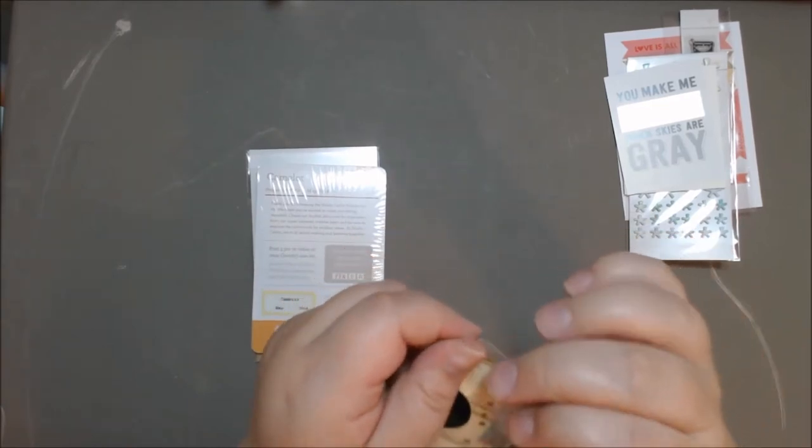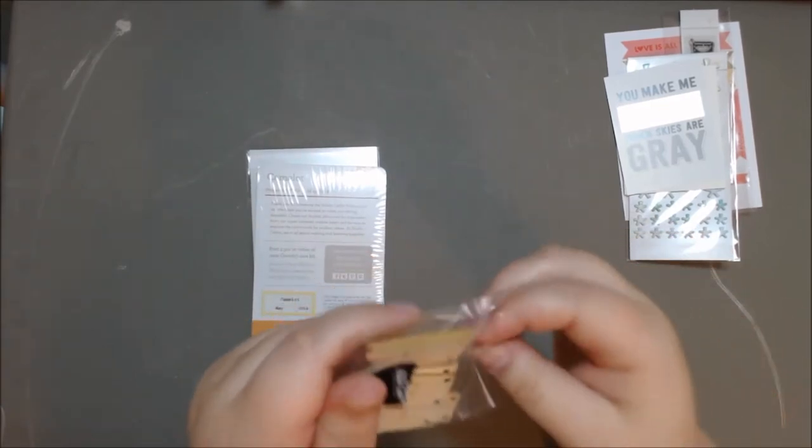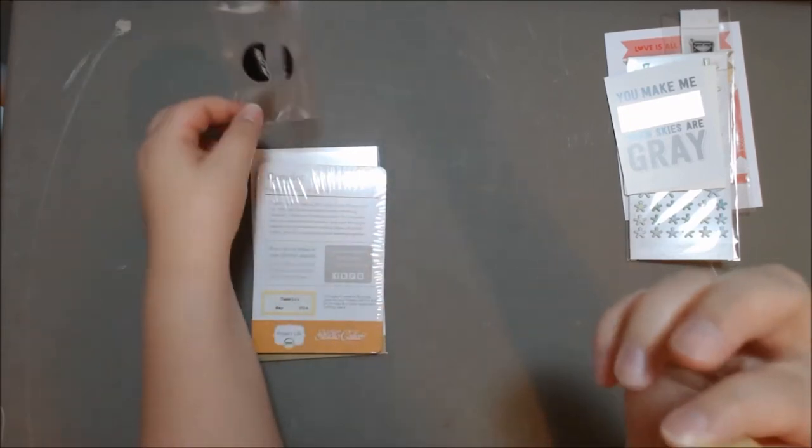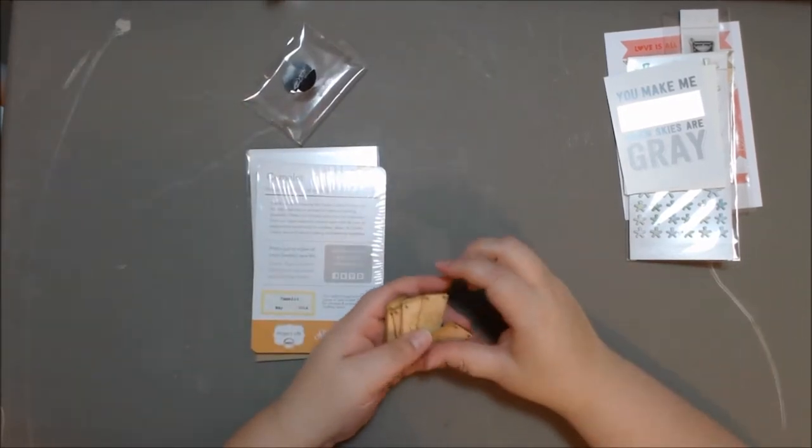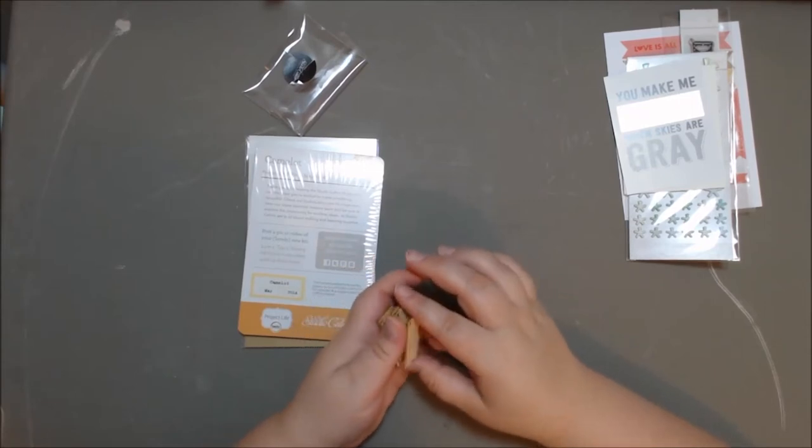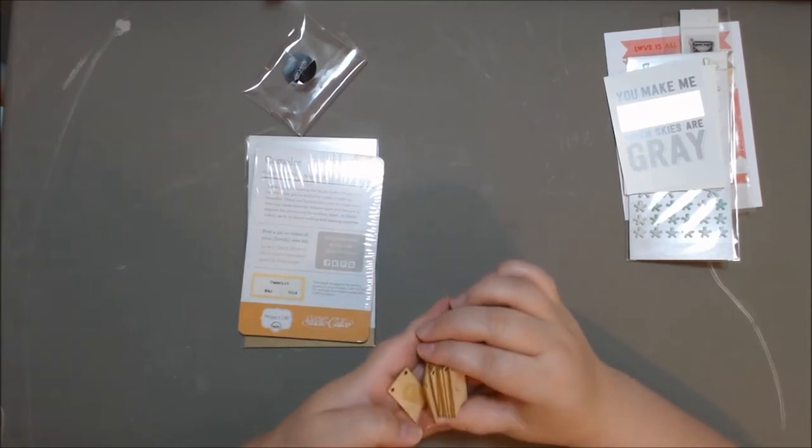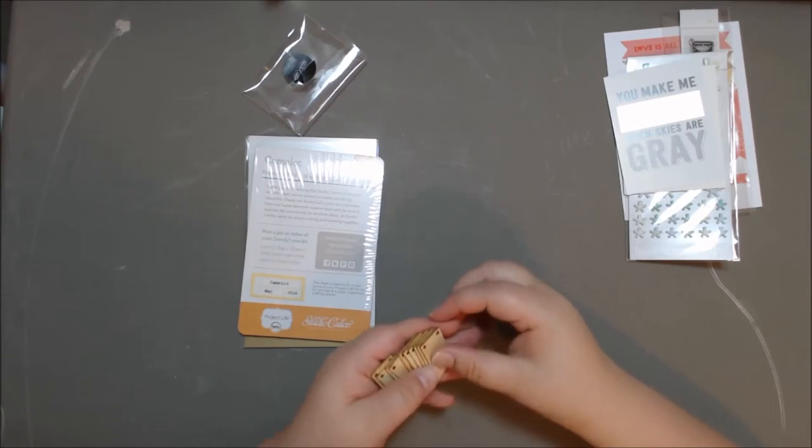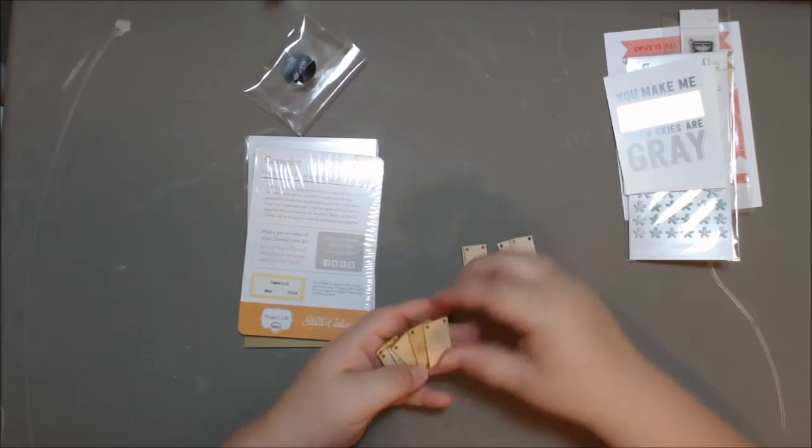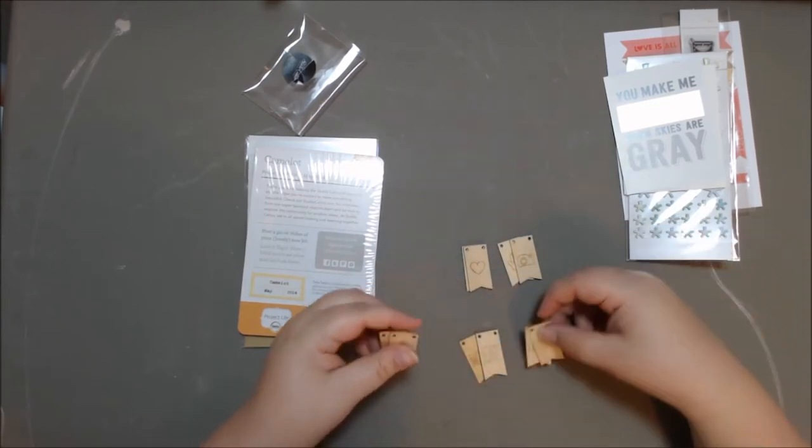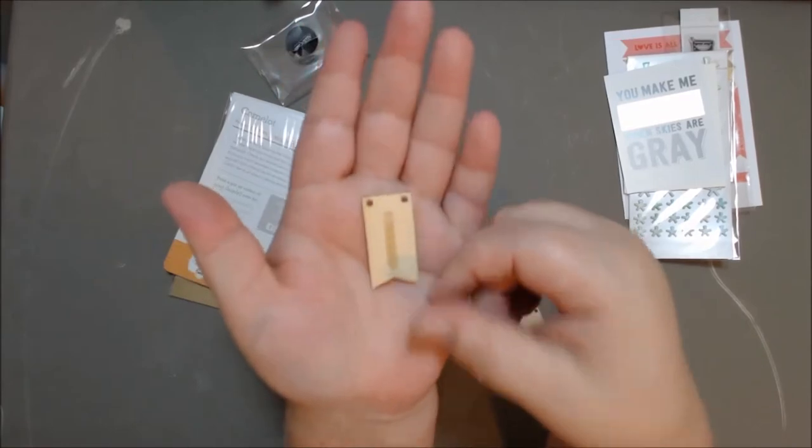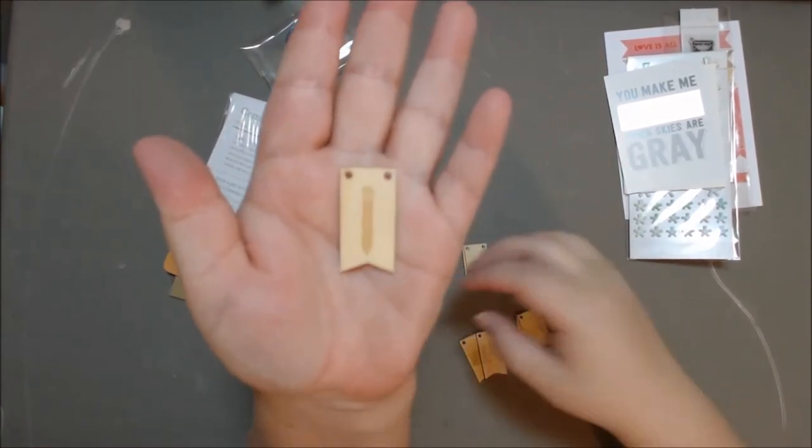And then it looks like some wood veneer banner pieces. Super cute! Oh my gosh, you actually get quite a few in here. I thought there would be like three or four. Let's see, one, two, three, four, five, six, seven, eight, nine... I think four, six, ten. Okay, ten. Cool.